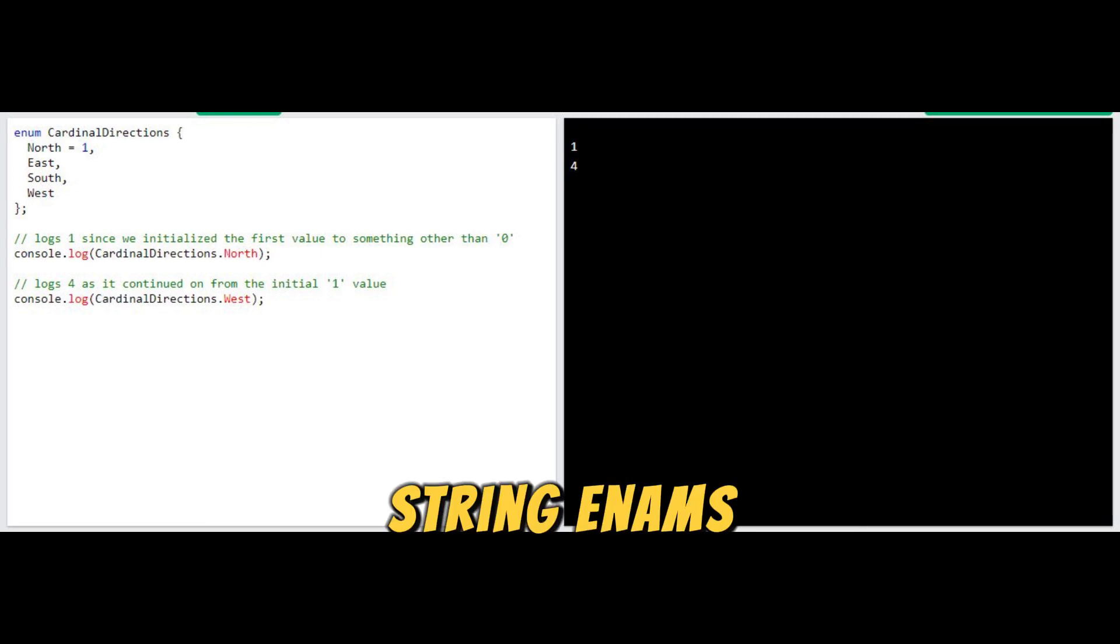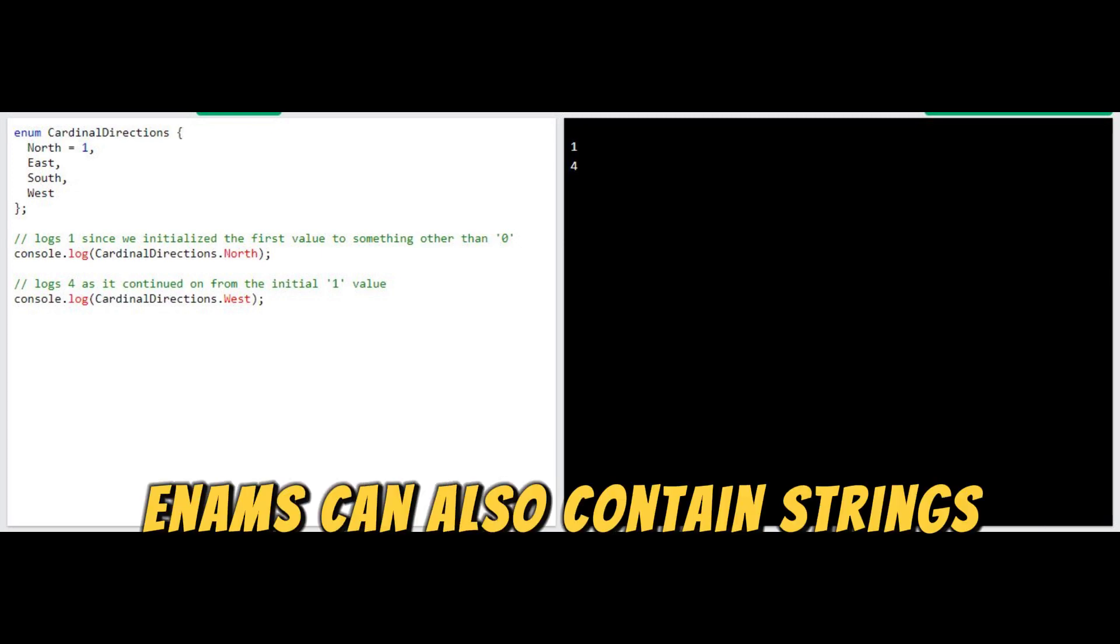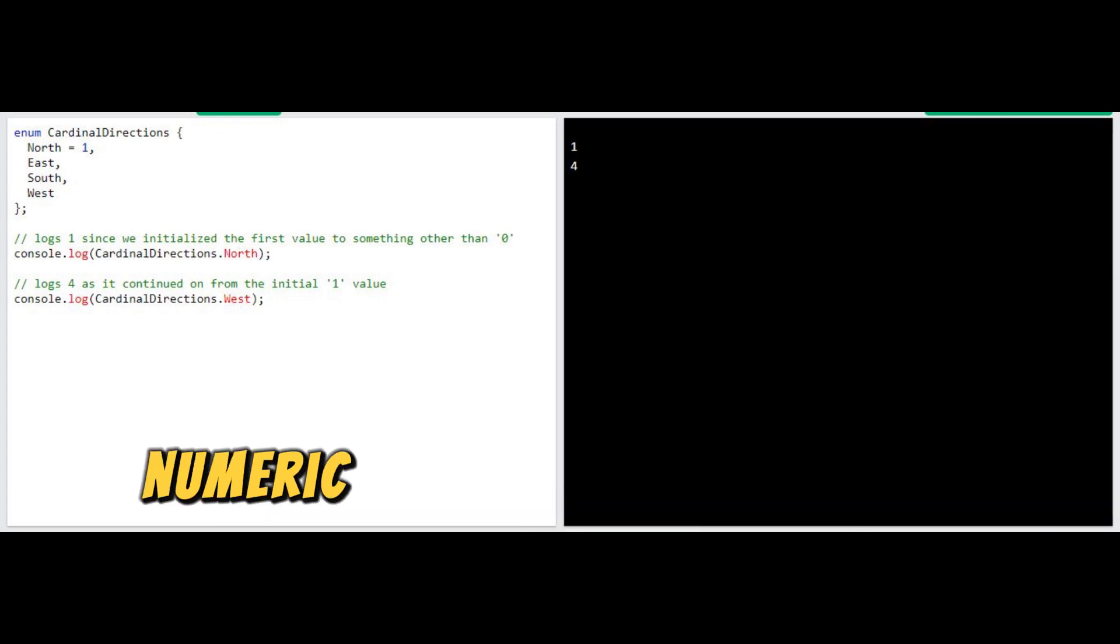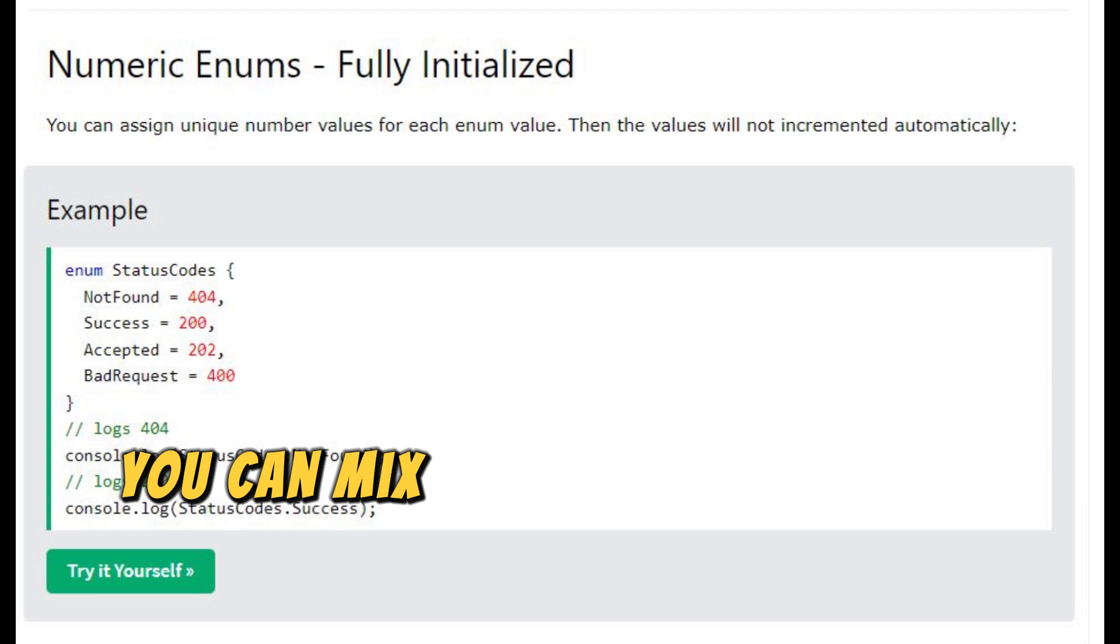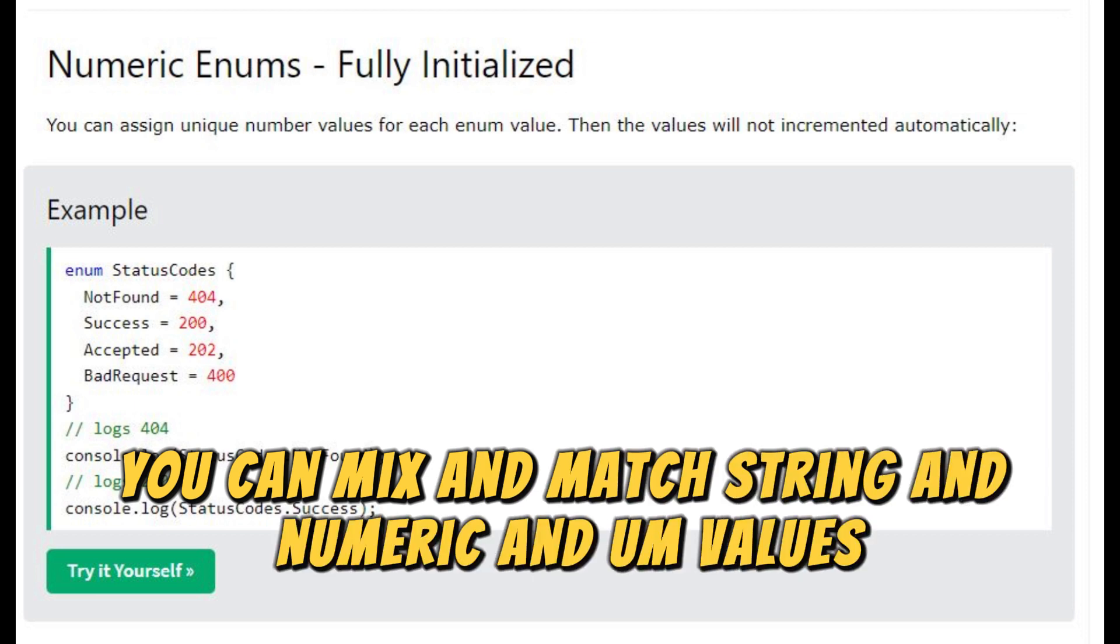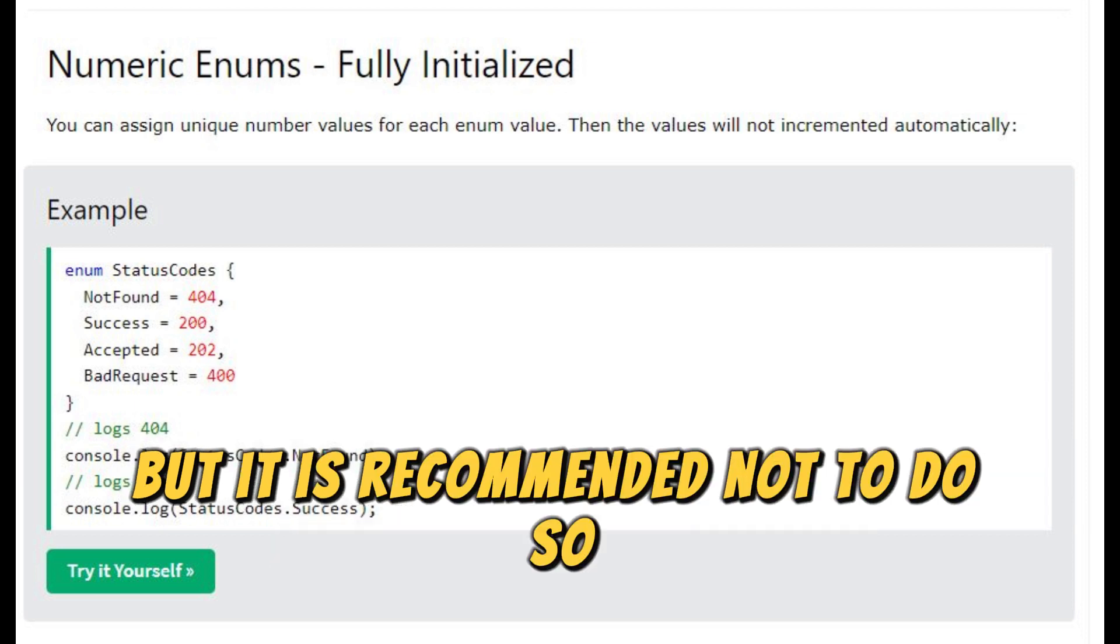String enums. Enums can also contain strings. This is more common than numeric enums because of their readability and intent. Technically, you can mix and match string and numeric enum values, but it is recommended not to do so.